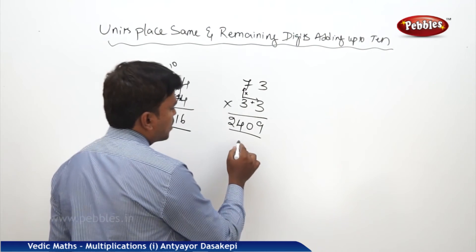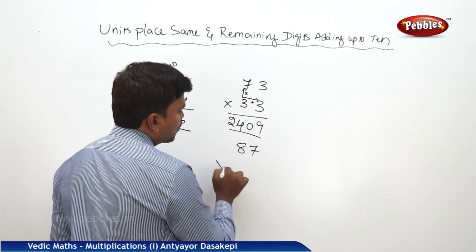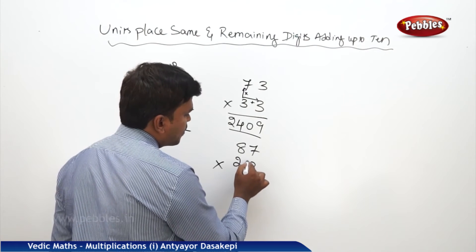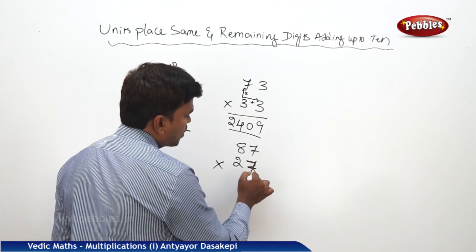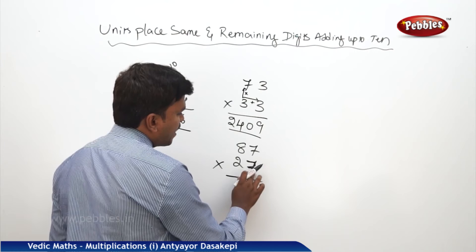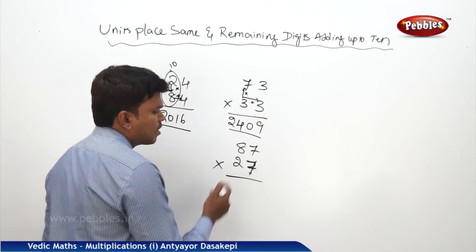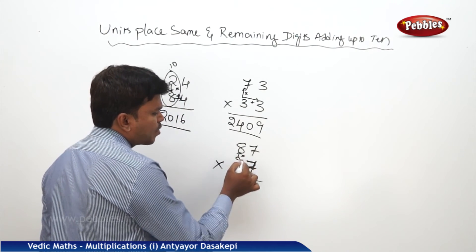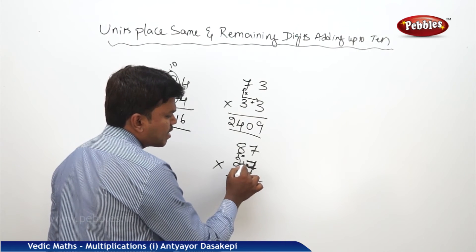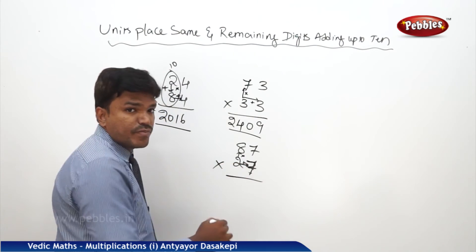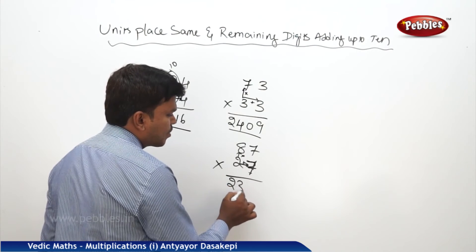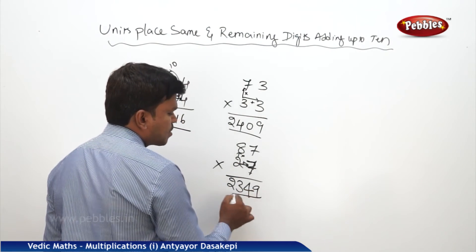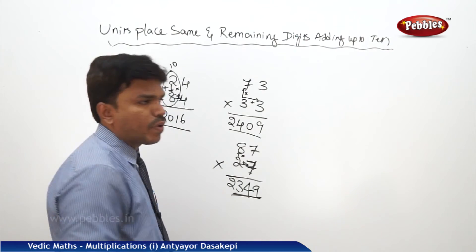One more example: 87 into 27. Go for the L-shape technique. First multiply: 8 times 2 is 16. Add the right side digit 7: 16 plus 7 is 23. Write 23 here. Now what is 7 times 7? It is 49. So your answer is 2349.